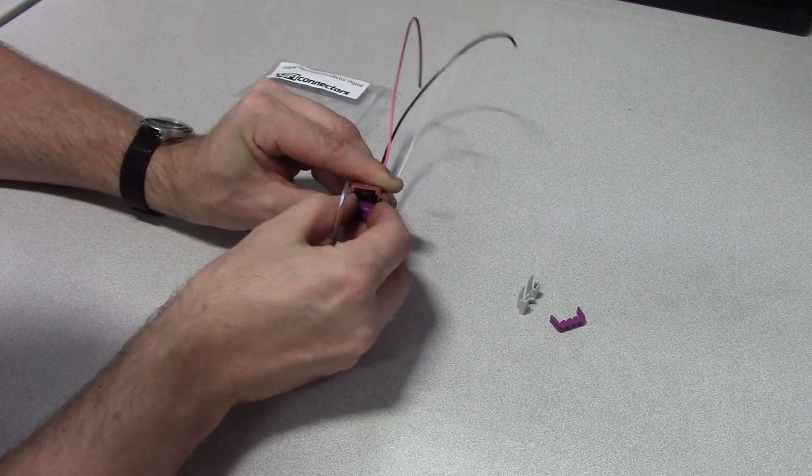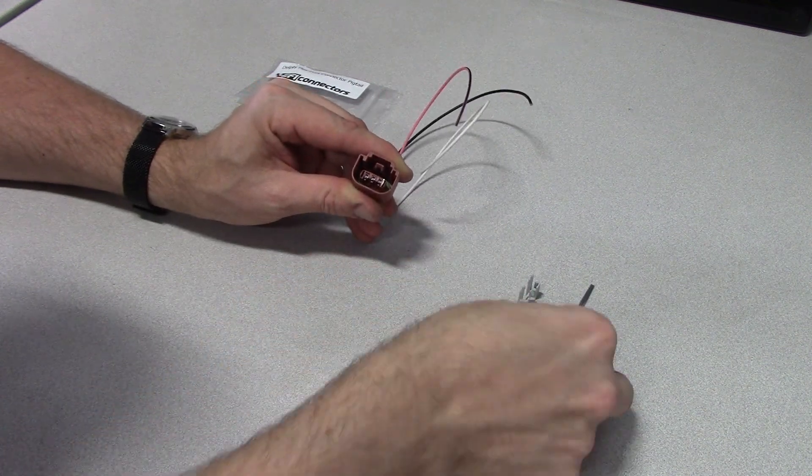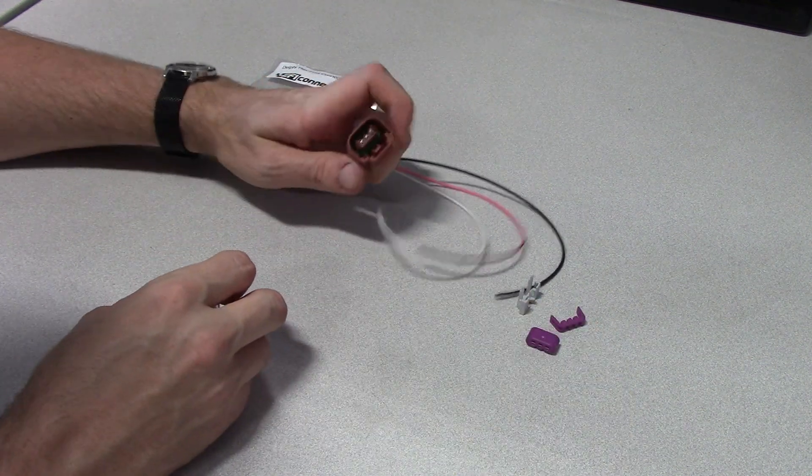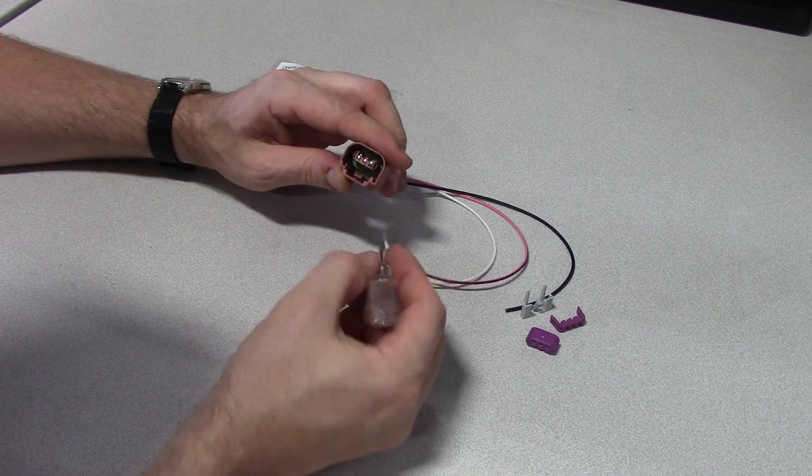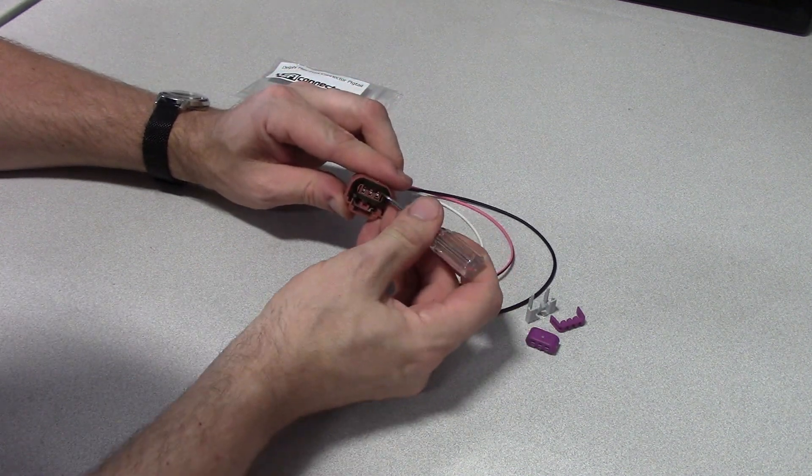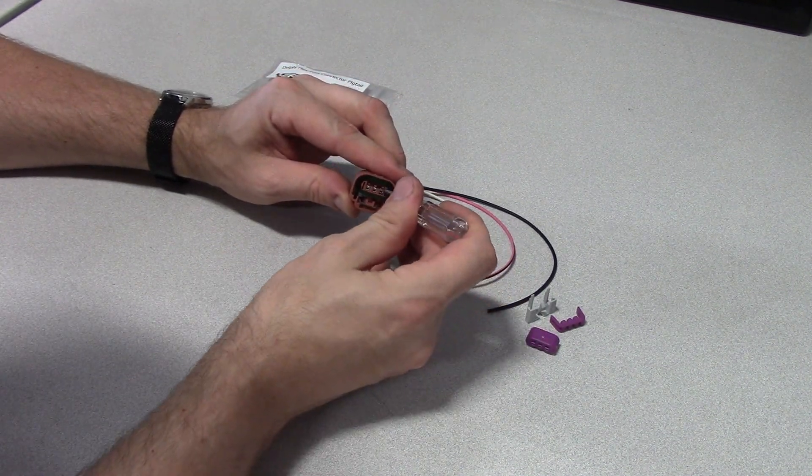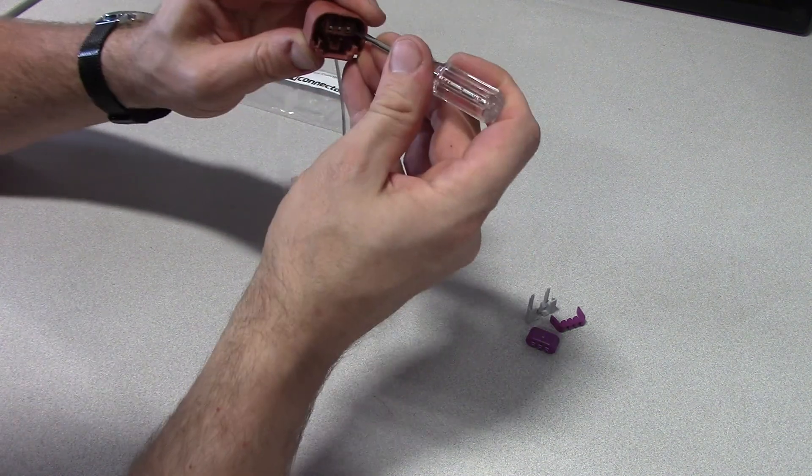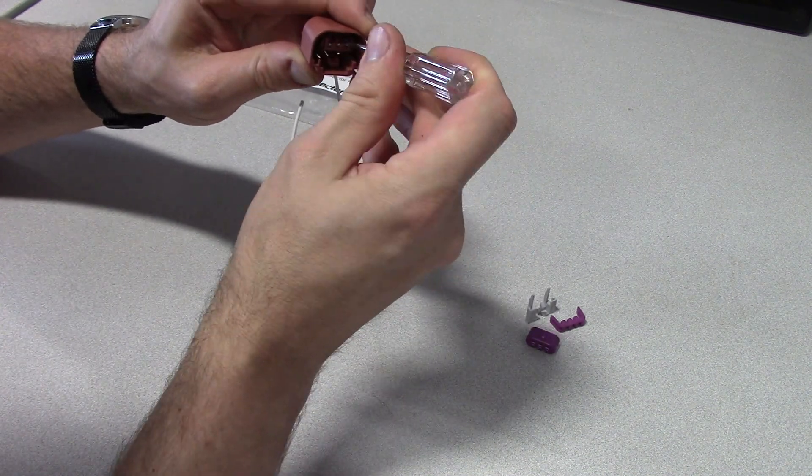And eventually it'll just come off. So now you have access to the pins. What you want to do is just take a small screwdriver and just pry up on this little brown tang.